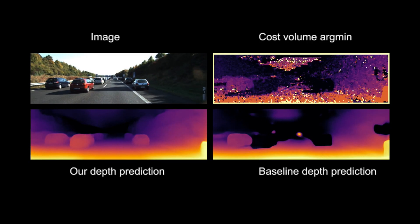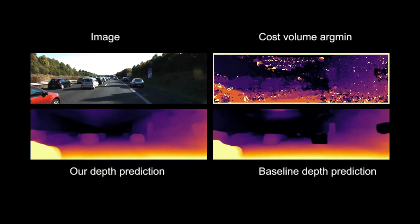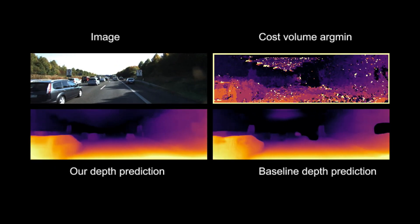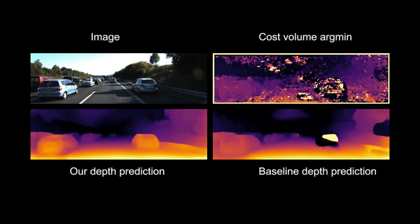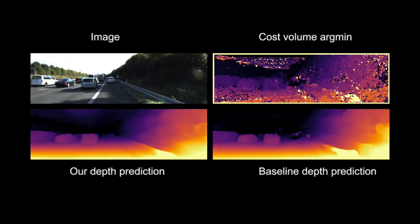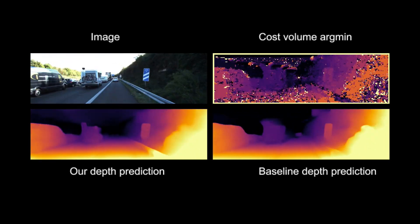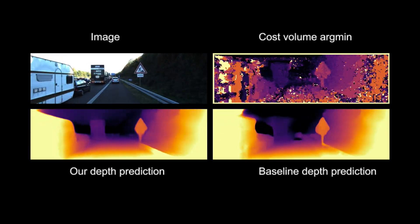Now, let's look at the impact of our contributions. On the left, we can see the disparity estimates of our full method, and on the right, we show the predictions made by a baseline model, which naively uses the cost volume being trained without our motion masking or our static frame augmentation.